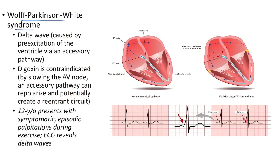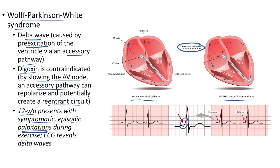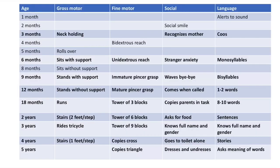Wolf-Parkinson-White syndrome: delta waves are seen due to pre-excitation of the ventricle via an accessory pathway. Digoxin is contraindicated because it slows the AV node, allowing the accessory pathway to repolarize and potentially create a re-entrant circuit. Clinical case: 12-year-old presents with symptomatic episodic palpitations during exercise; ECG reveals delta waves.